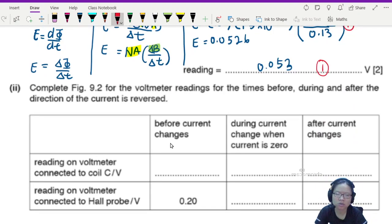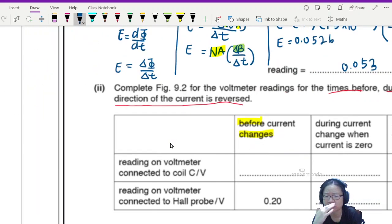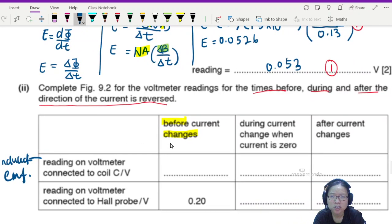Complete the table. This table is 4 marks. Looks very wordy. For the times before, during and after the direction of the current is reversed. Before the change means you changed already or not? Not yet. So what should the voltmeter reading be? Don't forget the voltmeter reading that is connected to coil C, this voltmeter reading reads the induced EMF. Let's do this part first. So if before change means no change, right? If there's no change, then the reading of the voltmeter will be 0.